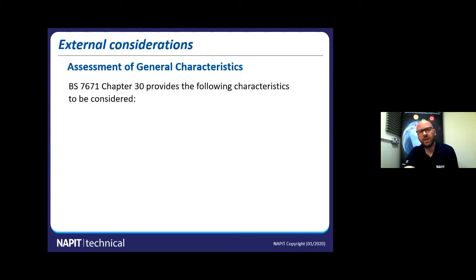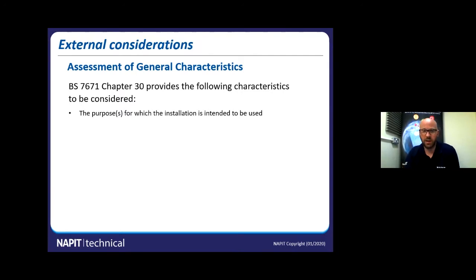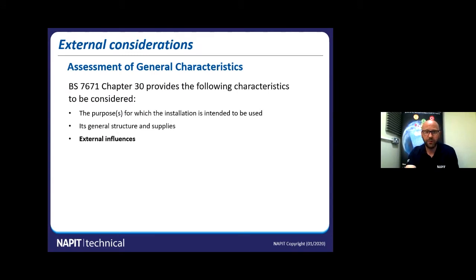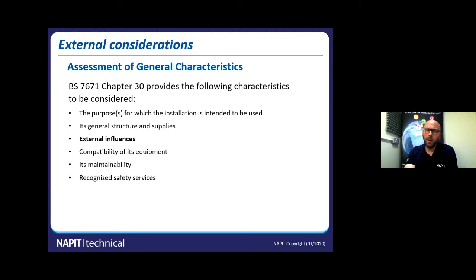You start off by looking at an assessment of the general characteristics. BS7671 chapter 30 provides the following characteristics which need to be considered: the purpose for which the installation is intended to be used, the general structure and the supplies that are present, the external influences — which is the topic of today's consideration — the compatibility of the equipment and its maintainability, recognised safety services, and the assessment of continuity of service.